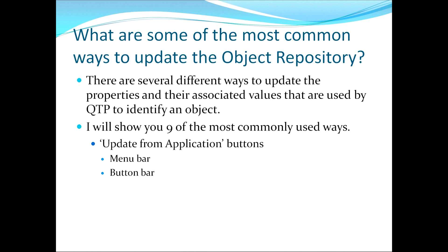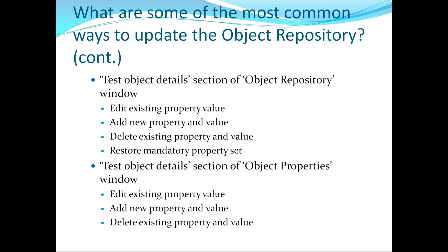This now moves us to the third topic: what are some of the most common ways to update the object repository? There are several different ways to update the properties and their associated values used by QTP to identify an object. I will show you nine of the most commonly used ways. The first couple will use the update from application functionality. The next few examples will use the test object details section of the object repository window. Then the next few will use the test object details section from within the object properties window. I'll now flip over to QTP to show you examples of these.